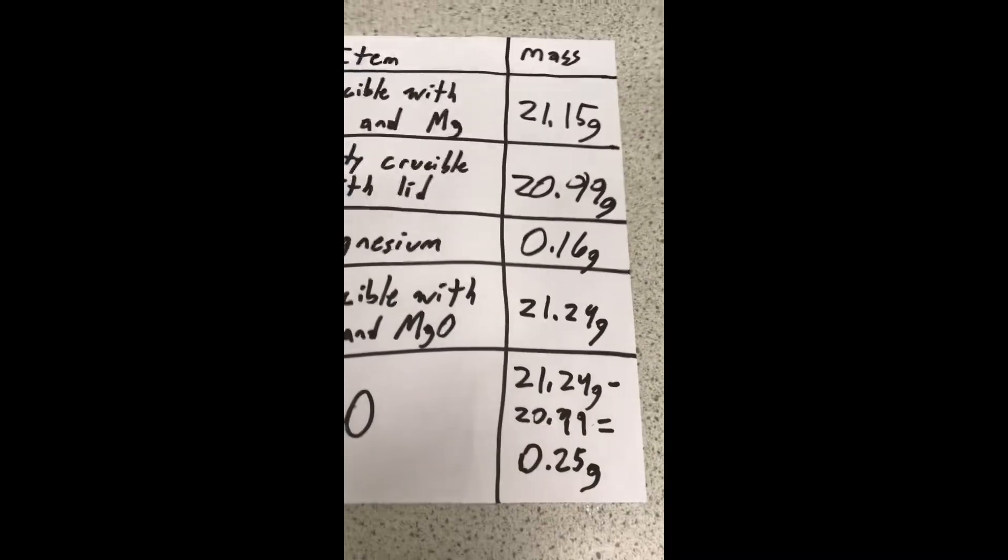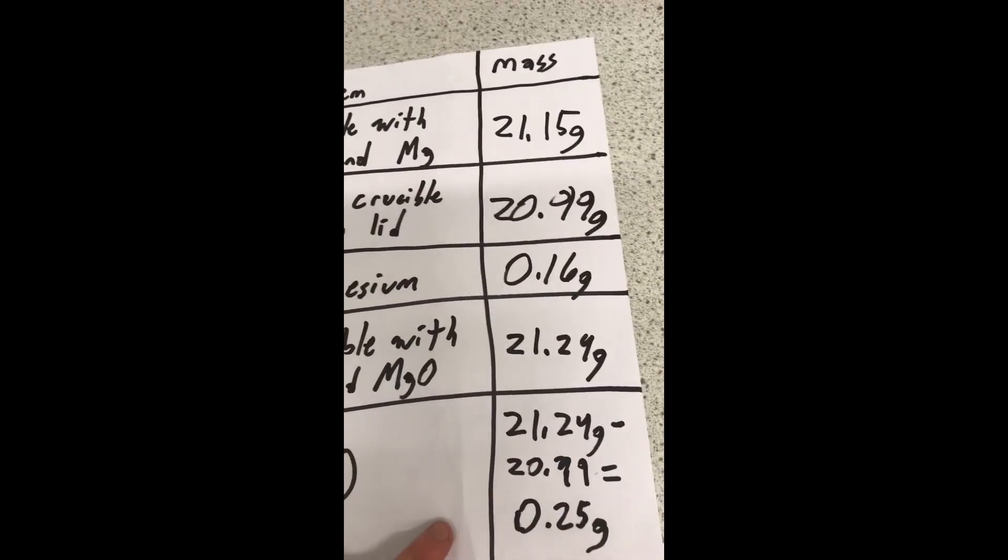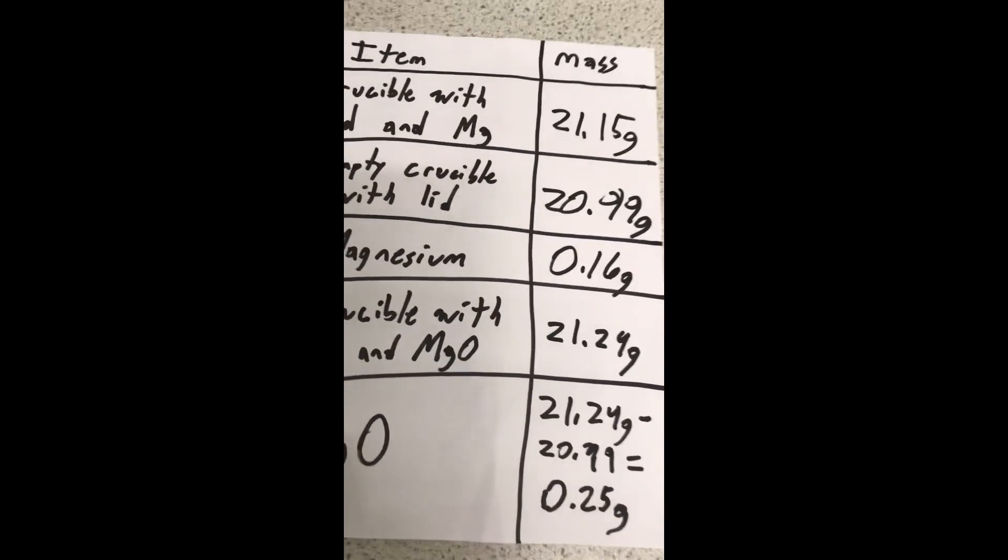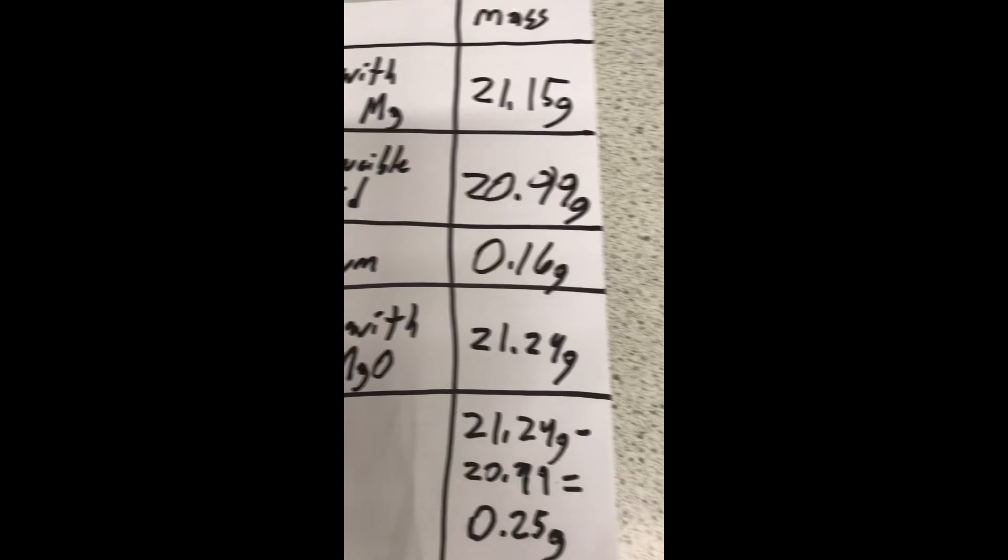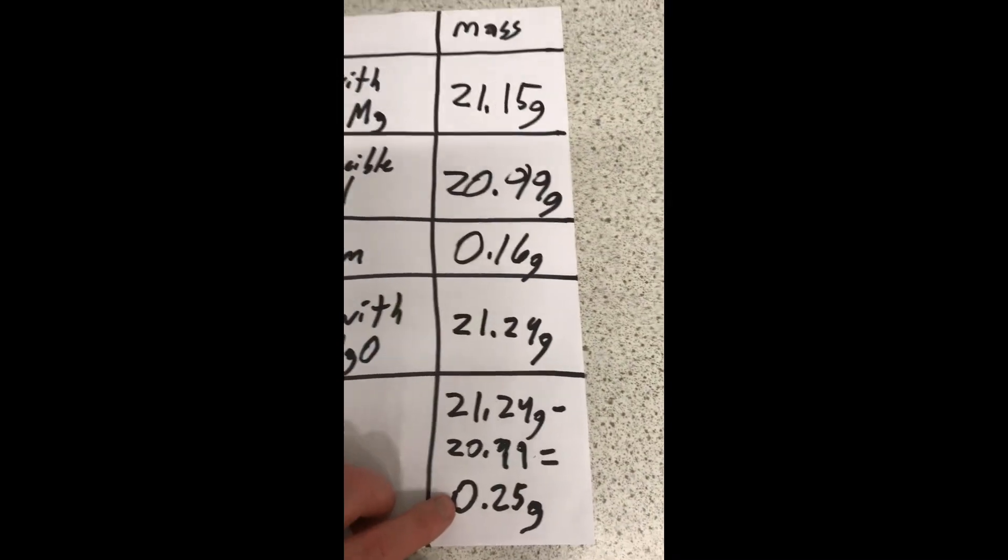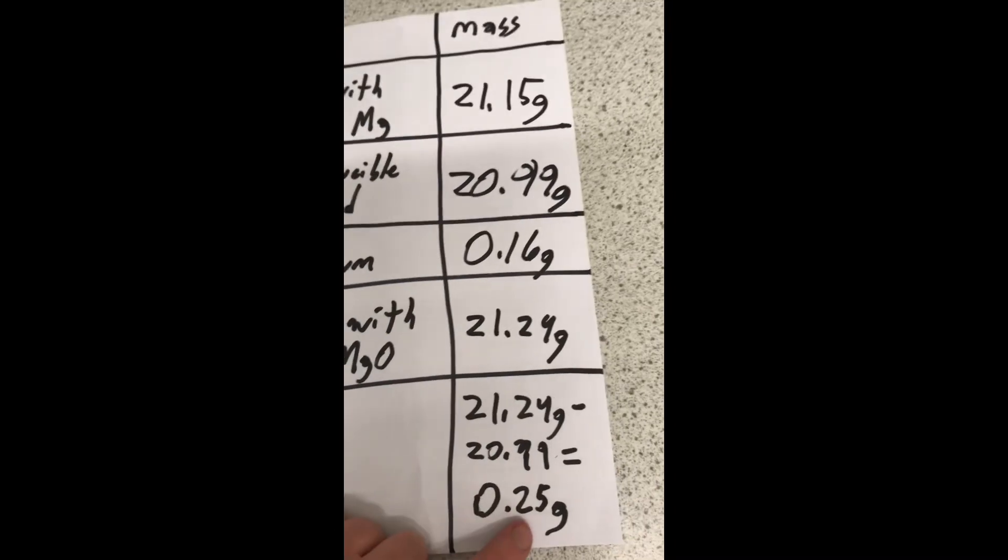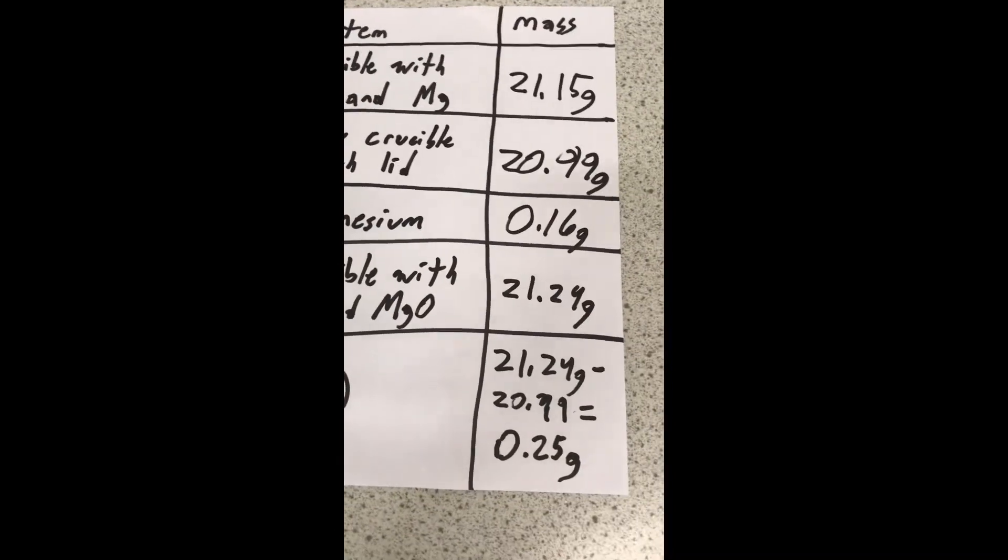So we can see that the mass has increased. Now, where did this extra mass come from? Well, the magnesium weighed 0.16 grams, and that means it combined with exactly 0.09 grams of oxygen to make 0.25 grams of magnesium oxide.